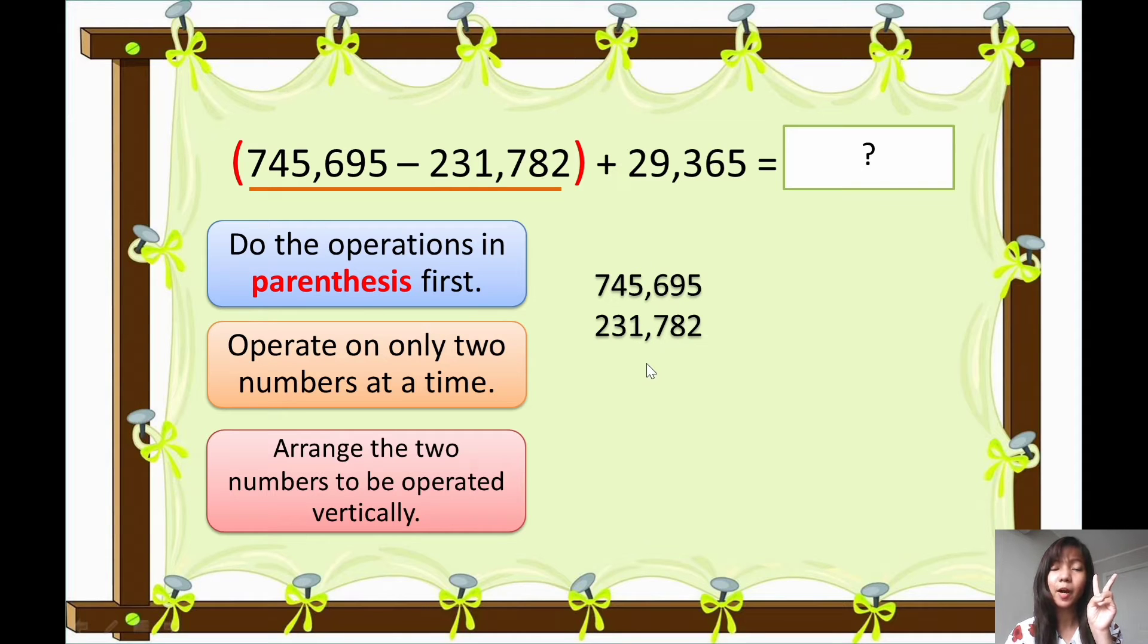All right, so minus, and then write the line. So now let's subtract the digits one by one. All right, so from here, let's start from here to here. Okay, so 5 minus 2 is 3.